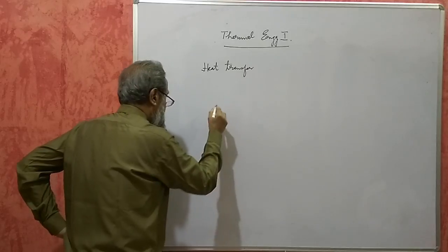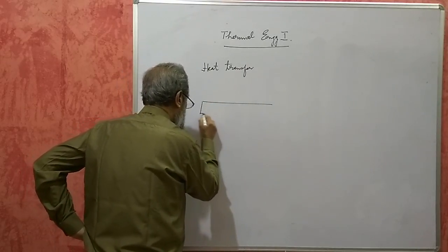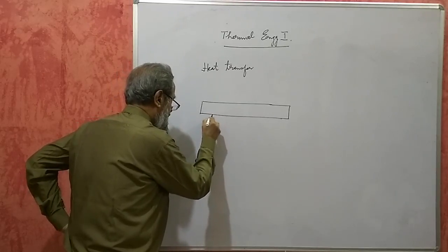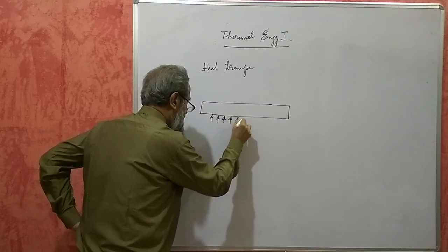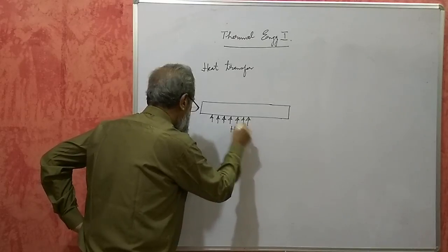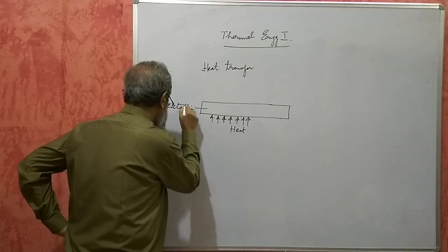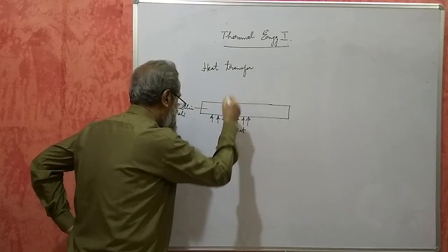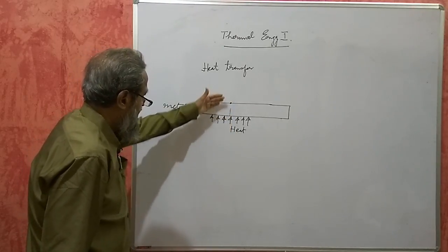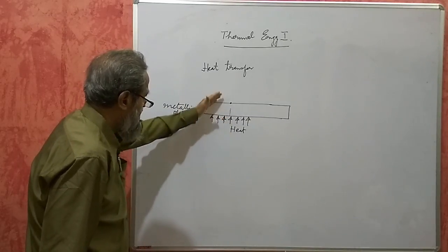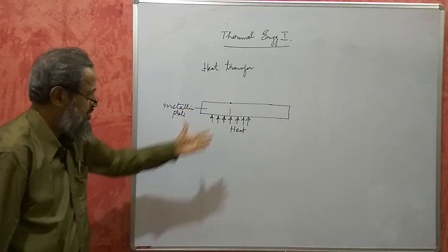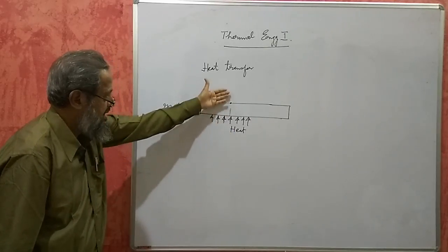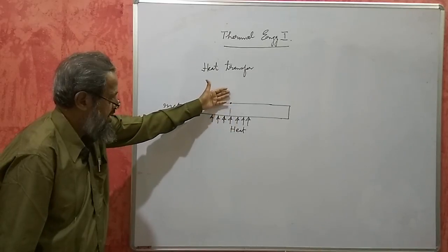Let us say we have a metallic plate here. We are heating this side, and after some time this heat will travel through it and reach the other side — from the bottom it will move to the top. You have seen this very commonly in a hotel where they make dosas: there is a stove below, and heat from the stove reaches the top of the plate.